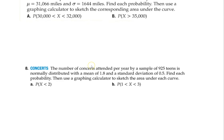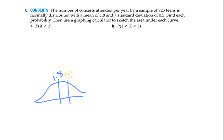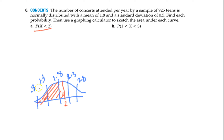Let's do this example with the calculator — and I want to show you why. The number of concerts attended per year by a sample of 925 teens is normally distributed with a mean of 1.8 and a standard deviation of 0.5. My standard deviation marks are: 2.3, 2.8 above and 1.3, 0.8 below. They want the probability of less than 2 concerts. Notice that 2 falls between 1.8 and 2.3 — it doesn't land exactly on a standard deviation mark. So this one cannot be done by hand; we must use the calculator.